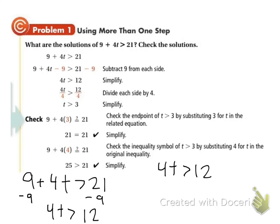I need to get t alone, so I need to get rid of the 4. Right now that's multiplication, so I'm going to divide by 4 on both sides and I get t is greater than 3.